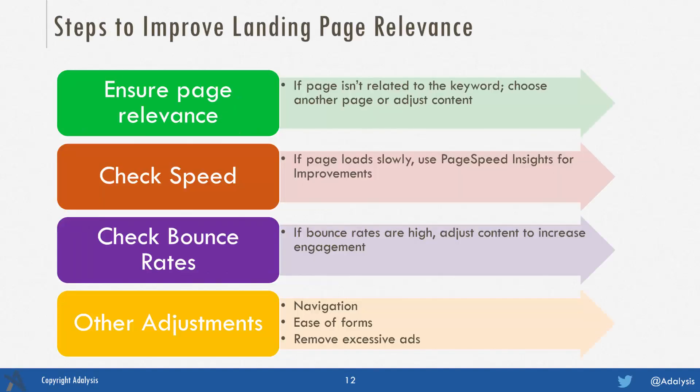To improve landing page relevance: number one, if the page isn't related to the keyword, choose another page or adjust the content. Two, check your speed — if your page loads slowly, use PageSpeed Insights, which is a Google tool that can give you suggestions for how to increase your speed. Check your bounce rates; if bounce rates are high, adjust the content to increase engagement. Bounce rates and bounce back are not exactly the same, but usually strongly correlated. Other adjustments include making sure your page is easy to navigate, removing excessive ads on a landing page, and making sure your forms are simple to use.